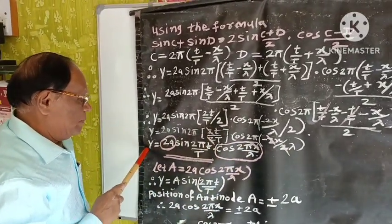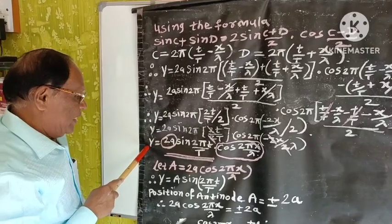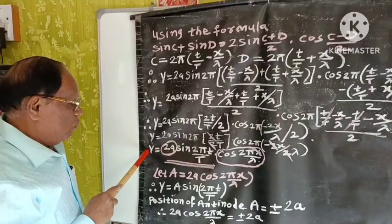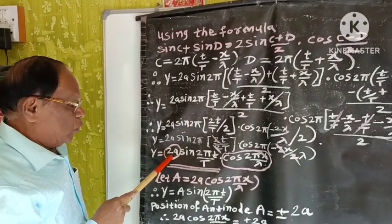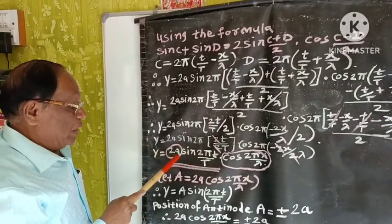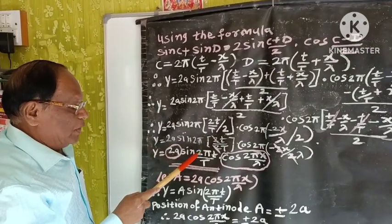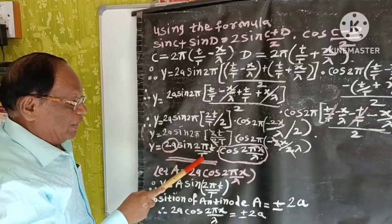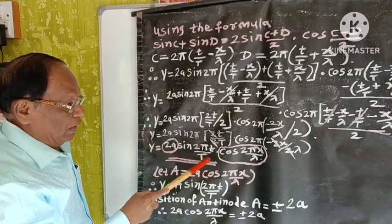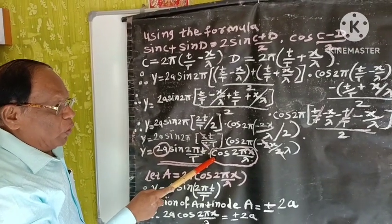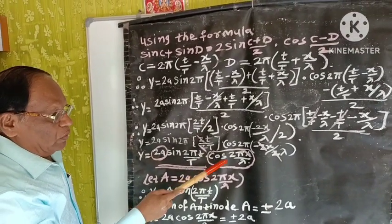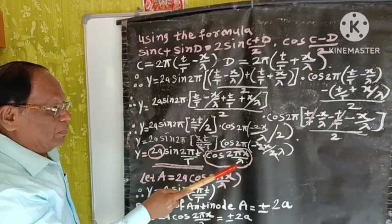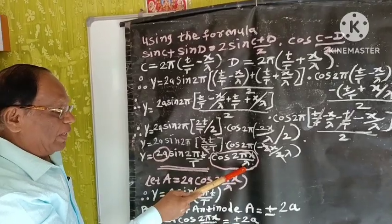Further simplifying, we get Y = 2A sin (2πt/T) cos (2πx/λ).